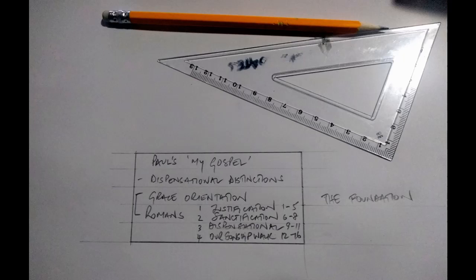You know, the book of Romans is where we start off. There you see justification chapters 1 to 5, sanctification Romans 6 to 8, the dispensational issue with Israel chapters 9 through 11, and then our sonship walk chapters 12 through 16. That's the foundational block that as a wise master builder Paul puts down for us. That's Paul's my gospel.